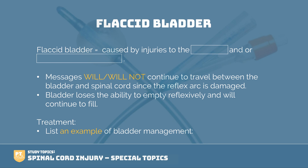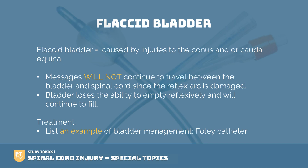The flaccid bladder is caused by injuries to the conus and/or cauda equina. Messages will not continue to travel between the bladder and the spinal cord because the reflex arc is damaged — that is the key here. The bladder loses the ability to empty reflexively and will continue to fill. The treatment for this is a Foley catheter.